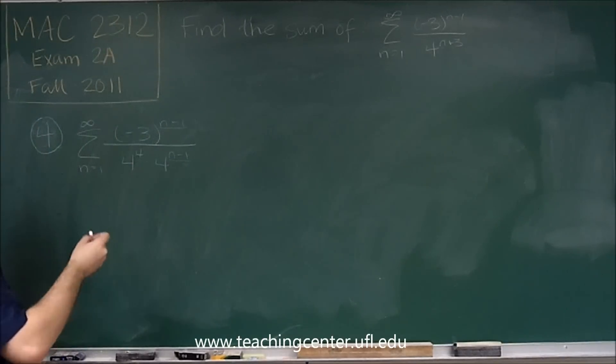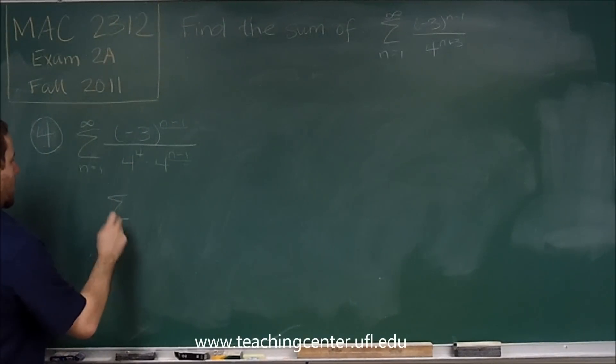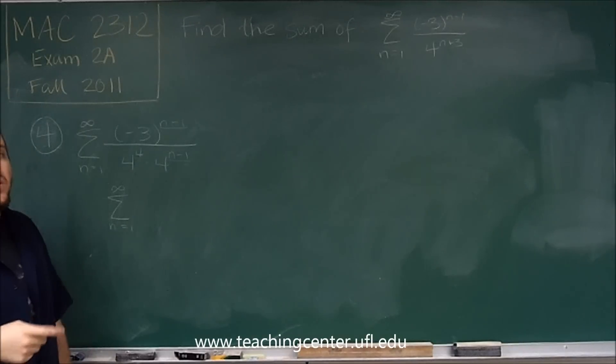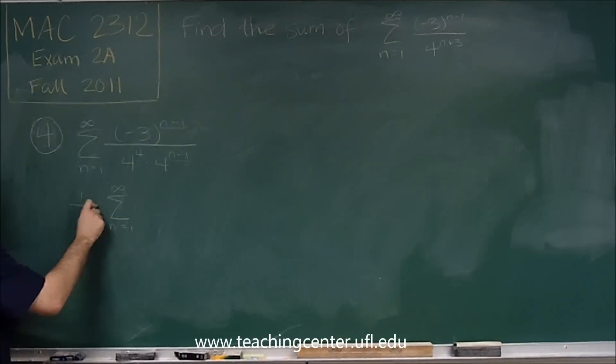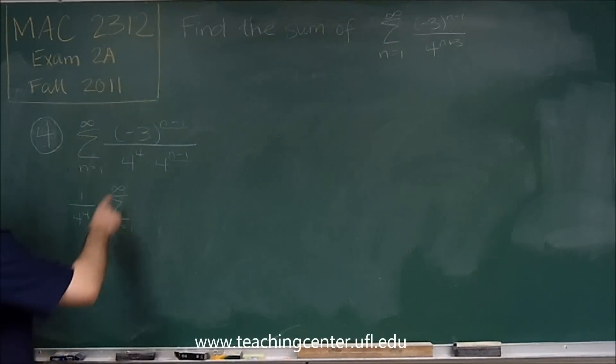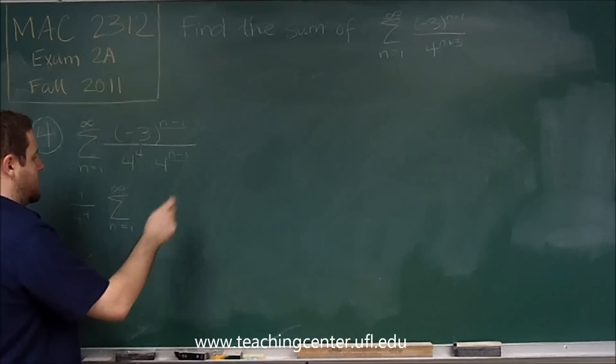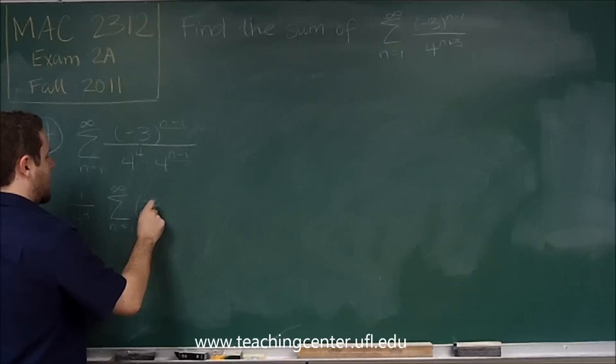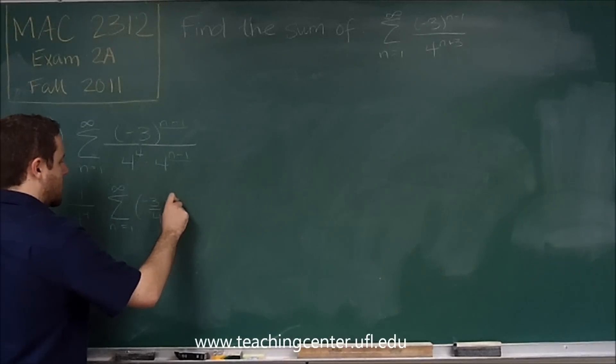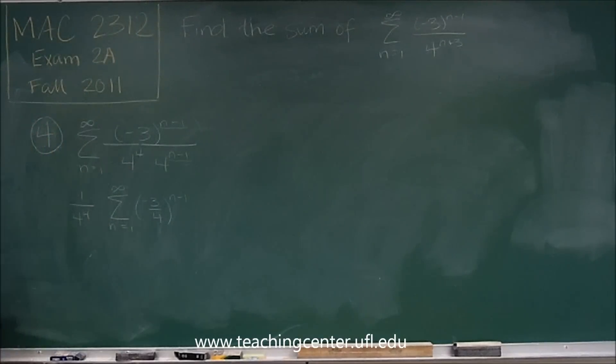So we have this four to the four left over, so let's rewrite this in a more logical way. This four to the four is now a constant, so that can be brought to the outside. One over four to the four. And inside, now we have negative three to the n minus one, and four to the n minus one. In other words, we could make that negative three fourths to the n minus one.